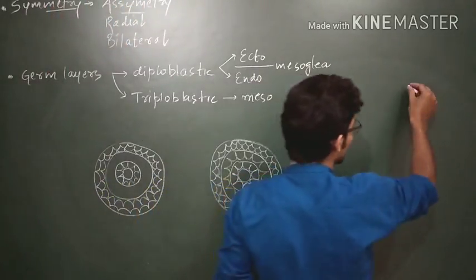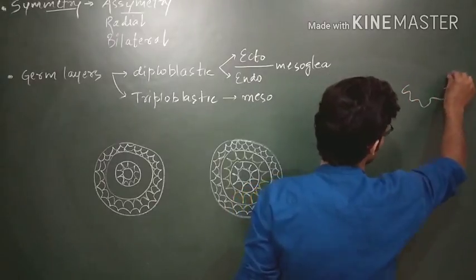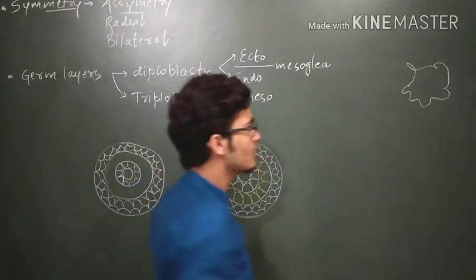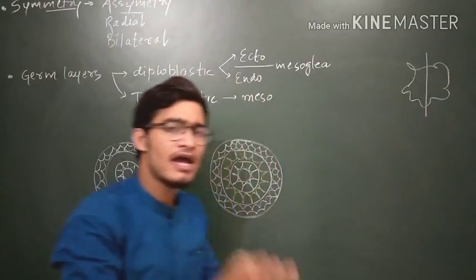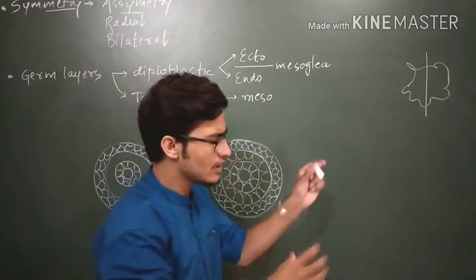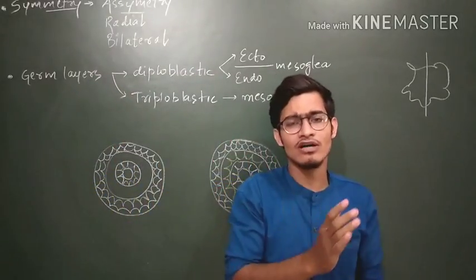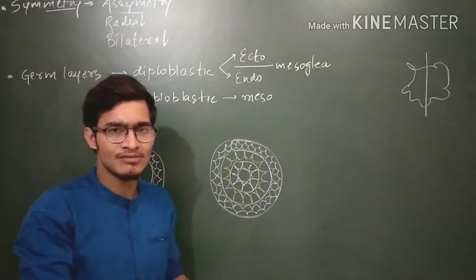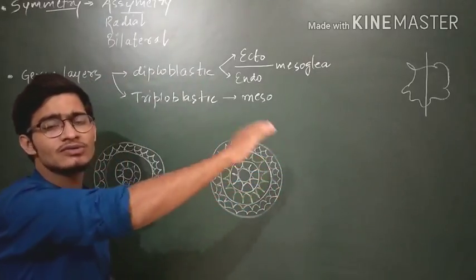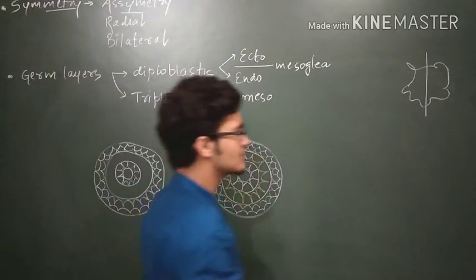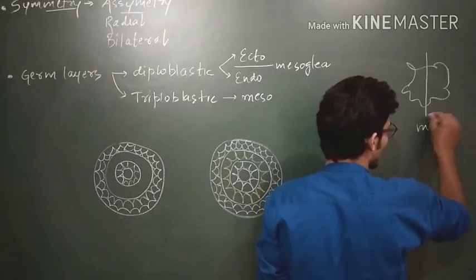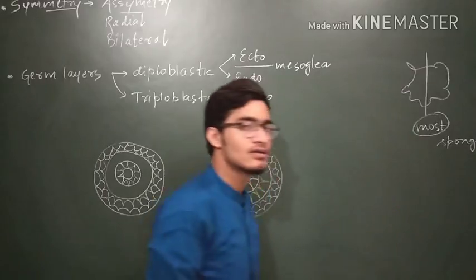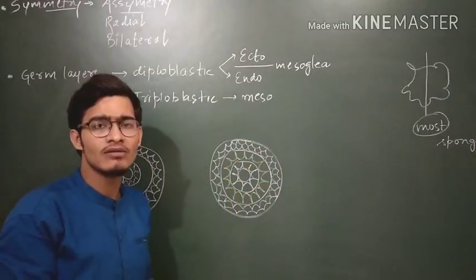The first type is asymmetric organisms — for example, an irregular shape. This irregular shape cannot be divided into two equal halves by any plane. These organisms are asymmetrical, and the examples are most of the sponges, that is organisms belonging to the phylum Porifera.